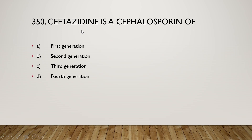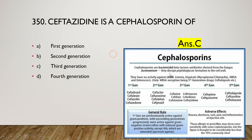Cefotaxime is a cephalosporin of which generation — first, second, third, or fourth? The right answer is option C — third generation cephalosporin. Cephalosporins are bactericidal beta-lactam antibiotics derived from the fungus Acremonium; they disrupt peptidoglycan formation in the cell wall. Five generations of cephalosporins exist, and cefotaxime belongs to the third generation.